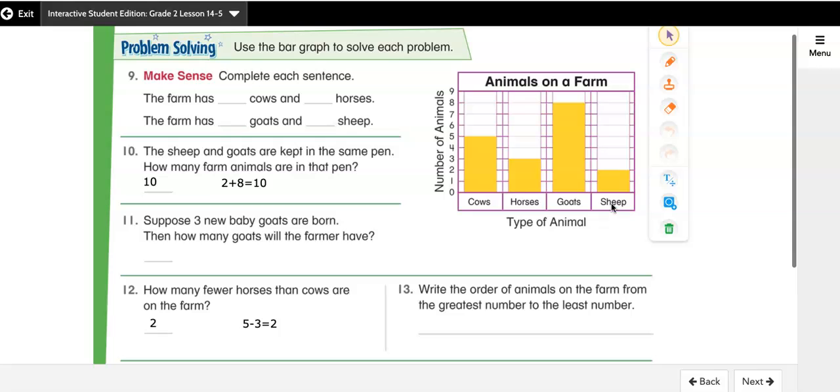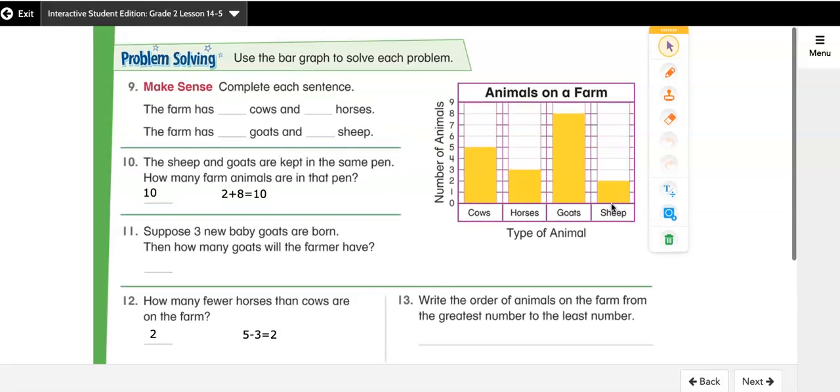All right, friends, that's it for 14-5. When you finish watching this video, you can take out a blank piece of paper. Make sure that you go back and do all of the odds and then take your quick check on Pearson. Happy math.